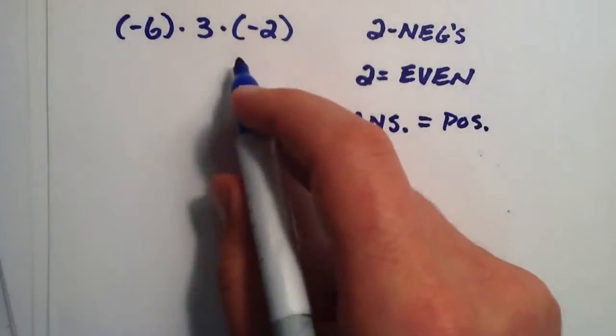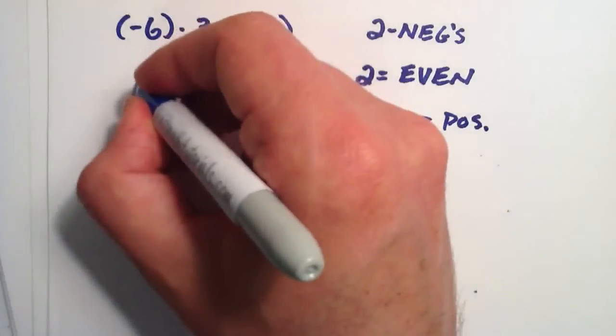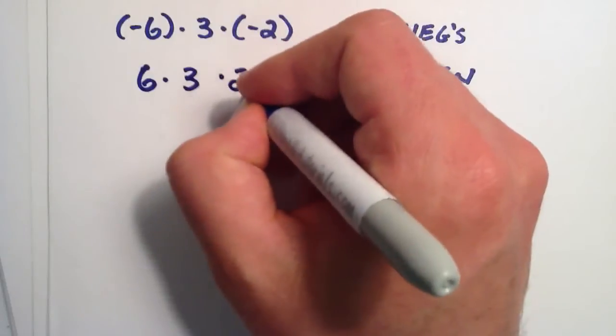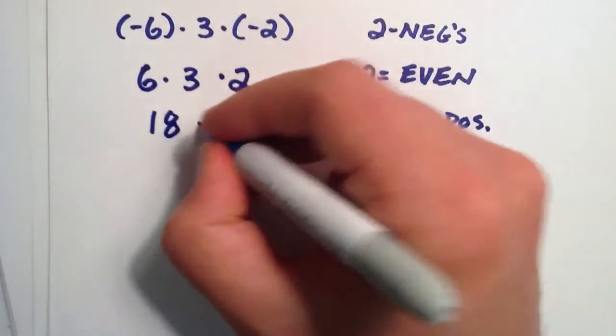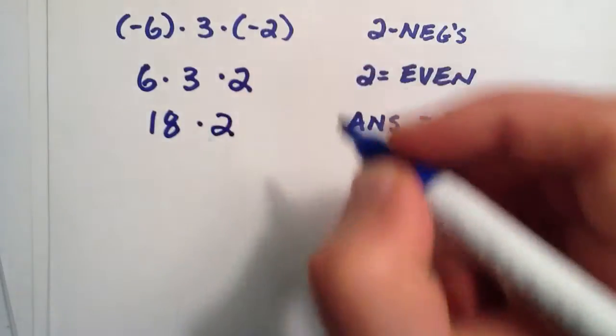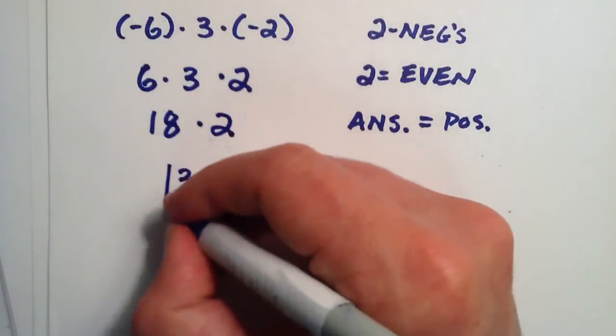We can simply rewrite this as a product of all positive numbers: 6 times 3 times 2. 6 times 3 is 18, which is multiplied by 2, and 18 multiplied by 2 gives us the answer of 36.